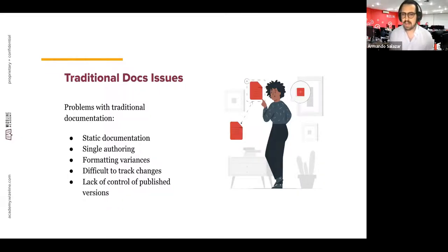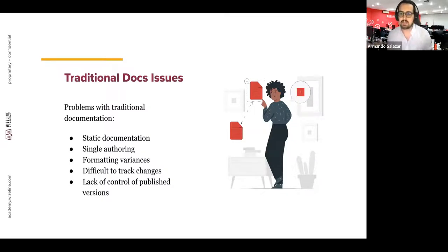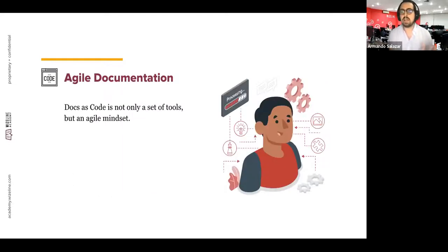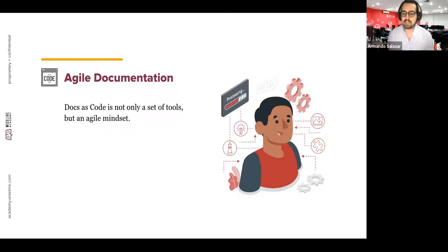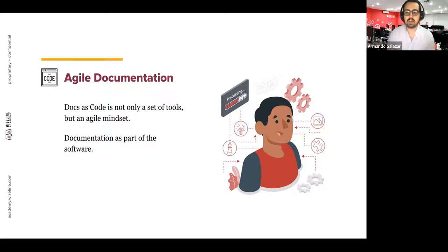With traditional documentation, it's also very difficult to track all changes made to documents, and there is no control over existing published versions. Considering that applications are in constant movement and constantly updated, this type of documentation becomes obsolete very quickly. Docs as Code is not only a set of tools, but an agile mindset for creating documents — treating documentation as a fundamental part of the software.